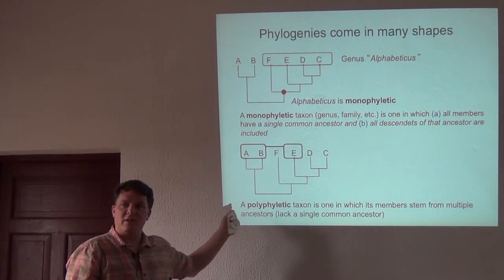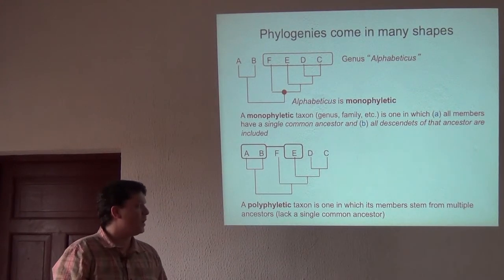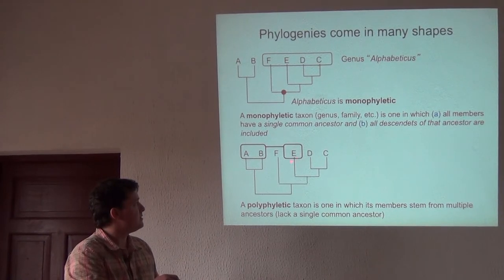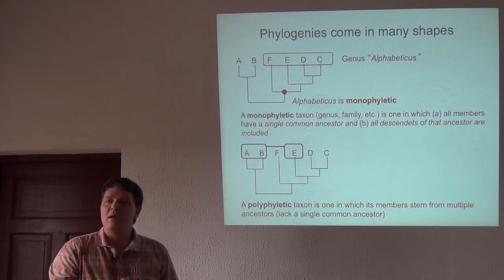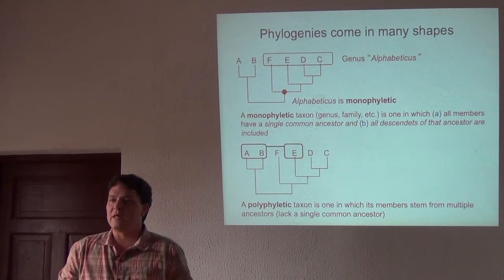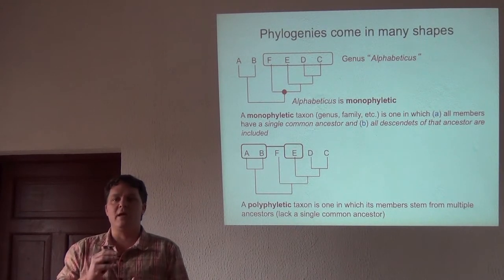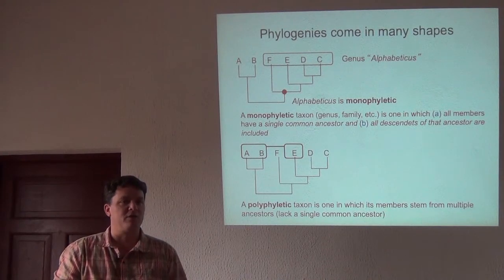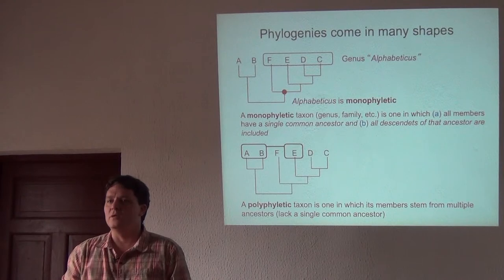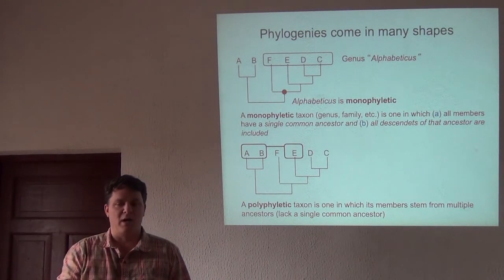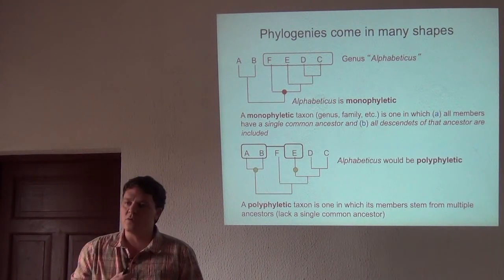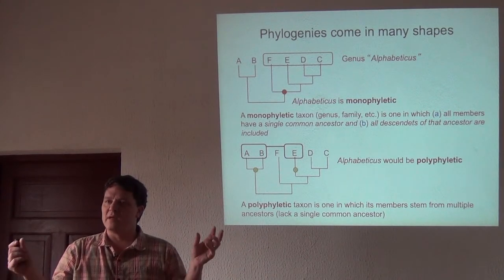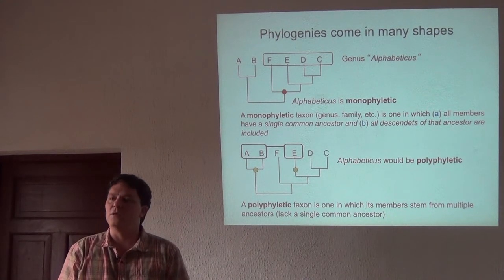In contrast to a monophyletic taxon, a polyphyletic taxon is one in which its members stem from multiple different ancestors. If you were the biologist who decided species E really looked more similar to species A and B and named those three things a new genus, that would be a polyphyletic taxon — a polyphyletic genus — because they stem from separate ancestors. That's polyphyly, and it's a violation of the basic principle that higher-level taxa should be monophyletic units.